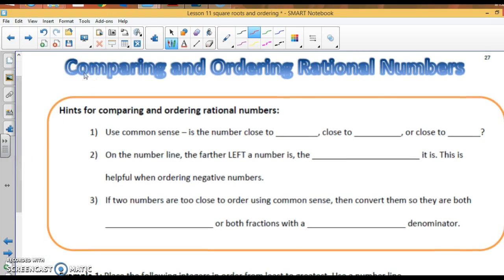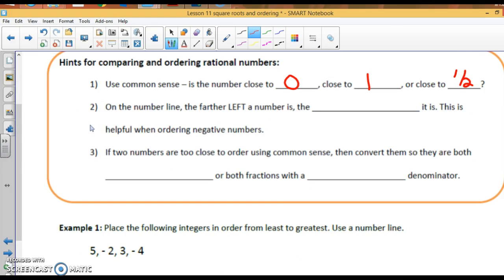Alright, we are going to order rational numbers. Rational numbers are fractions, decimals, and percents. Use common sense. Is it close to 0, close to 1, or close to a half? On the number line, the farther left a number is, the smaller it is. This is helpful when ordering negative numbers. If two numbers are too close to order using common sense, then convert them so they are both decimals or both fractions with a common denominator.